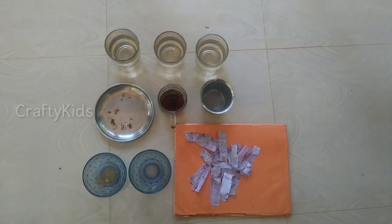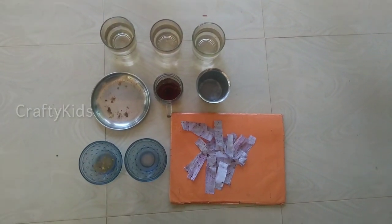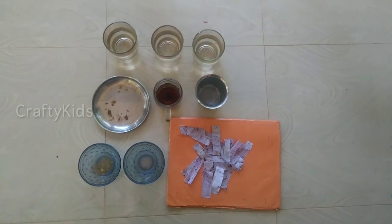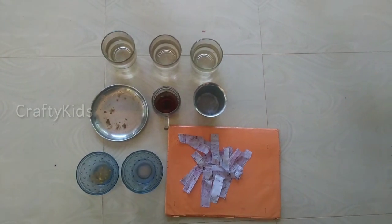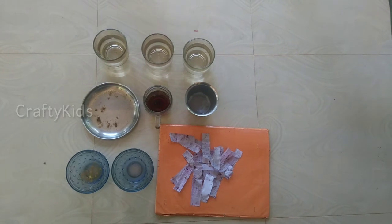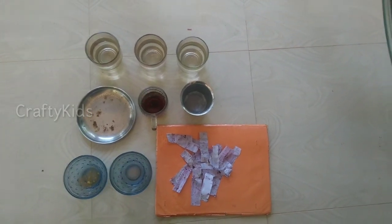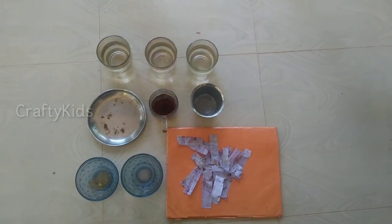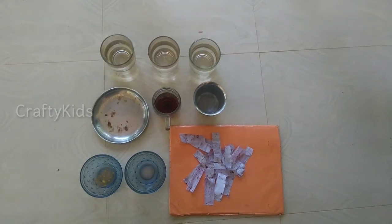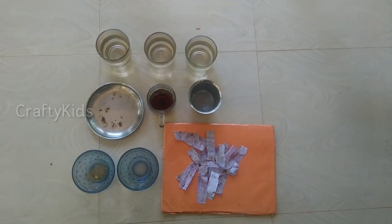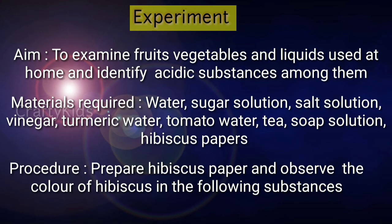Our inference is that the following substances have a sour taste and also change hibiscus petals into red color: lemon juice, vinegar, turmeric water, buttermilk, tomato water, gooseberry, and musambi. So they are acids.